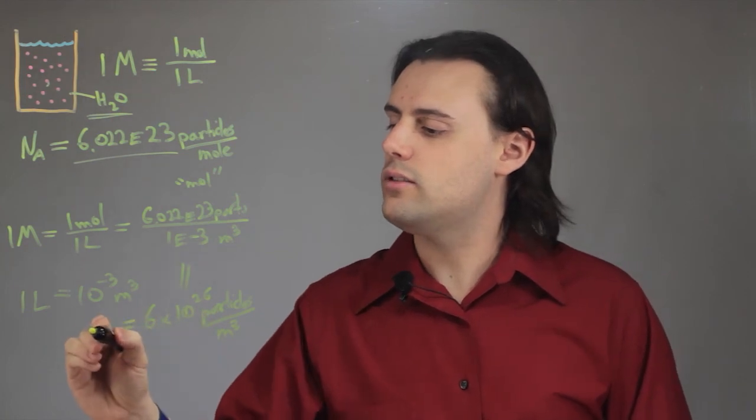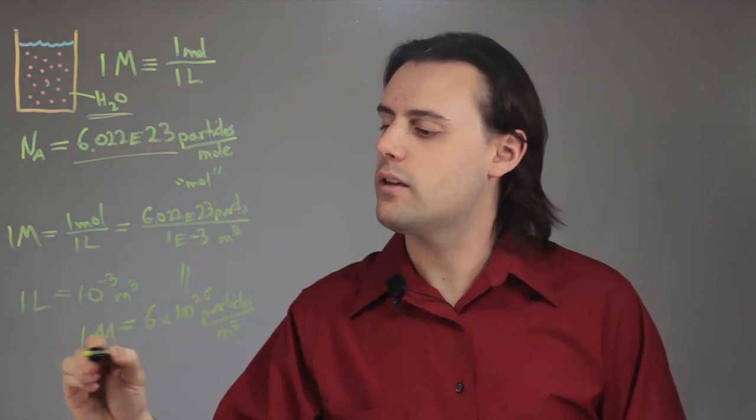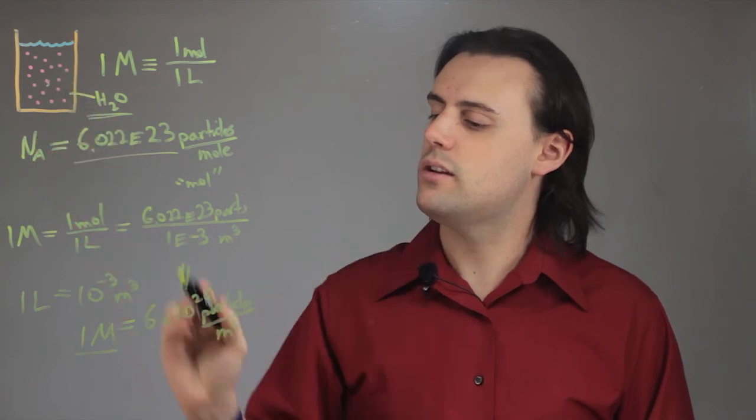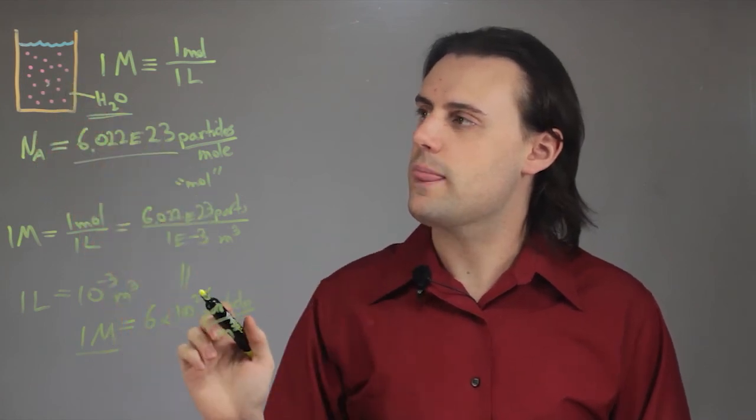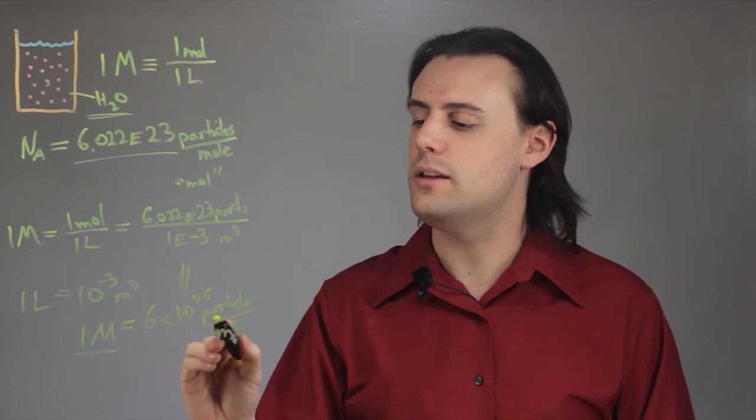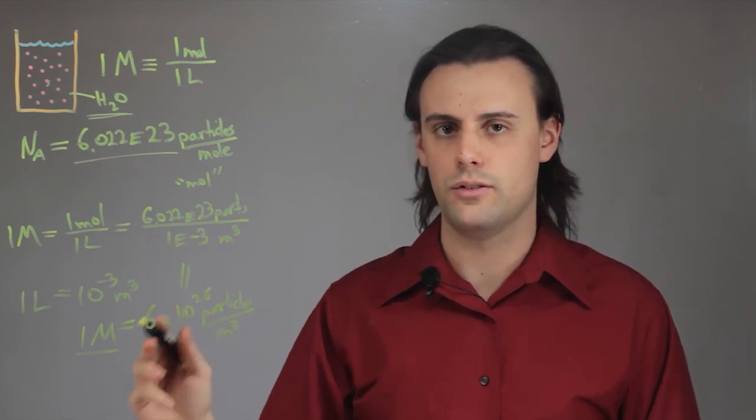So this represents 1 molar of the species that I'm considering in the beaker. 2 molar would simply be twice this number, and so on and so forth.